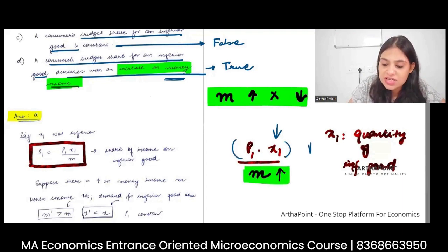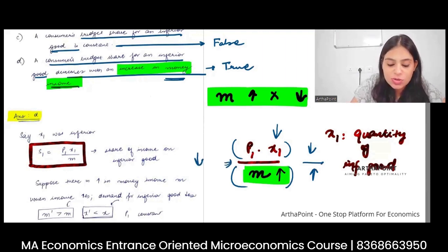So overall numerator is decreasing. Denominator is increasing. What will happen to the fraction? It will decrease. If the fraction decreases, this fraction was the share. The share also decreases.